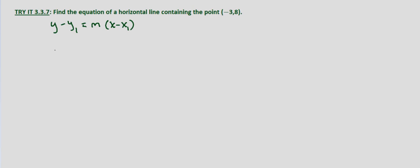We're told that it's a horizontal line, so that means the slope equals zero, and we're given the point x1, y1 is negative 3, 8.